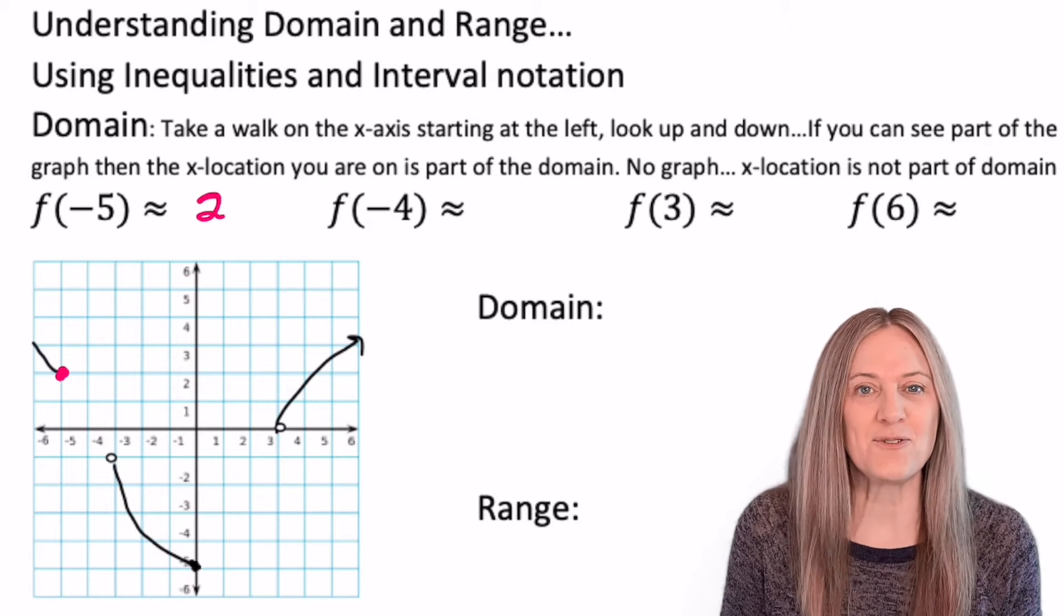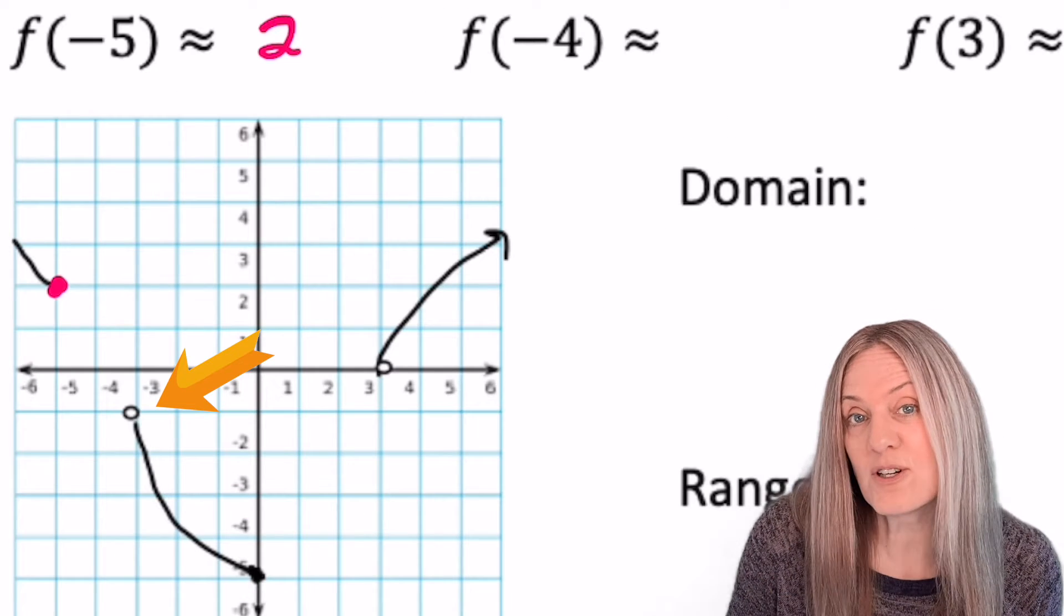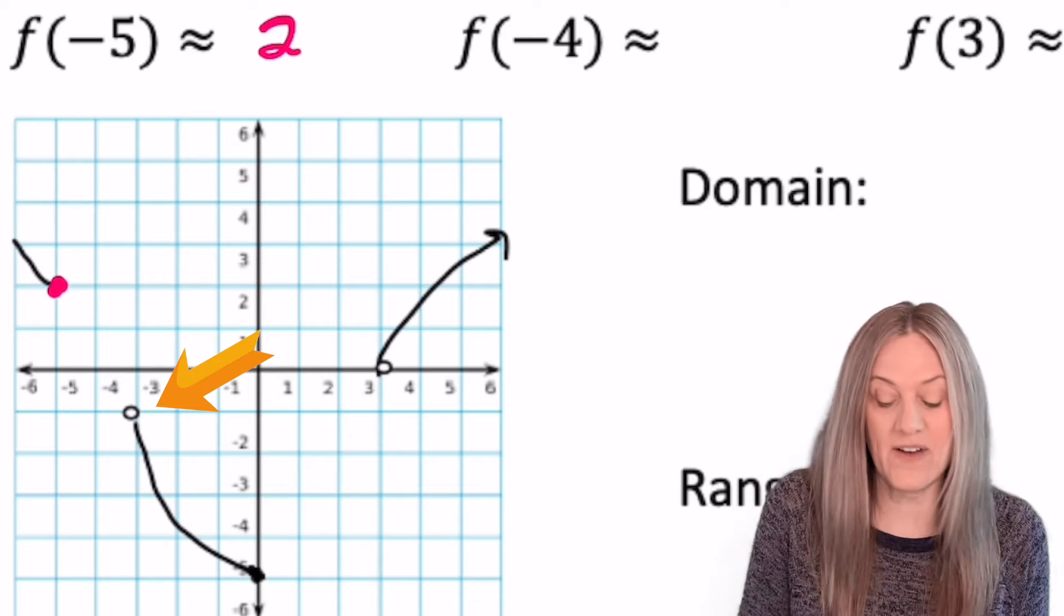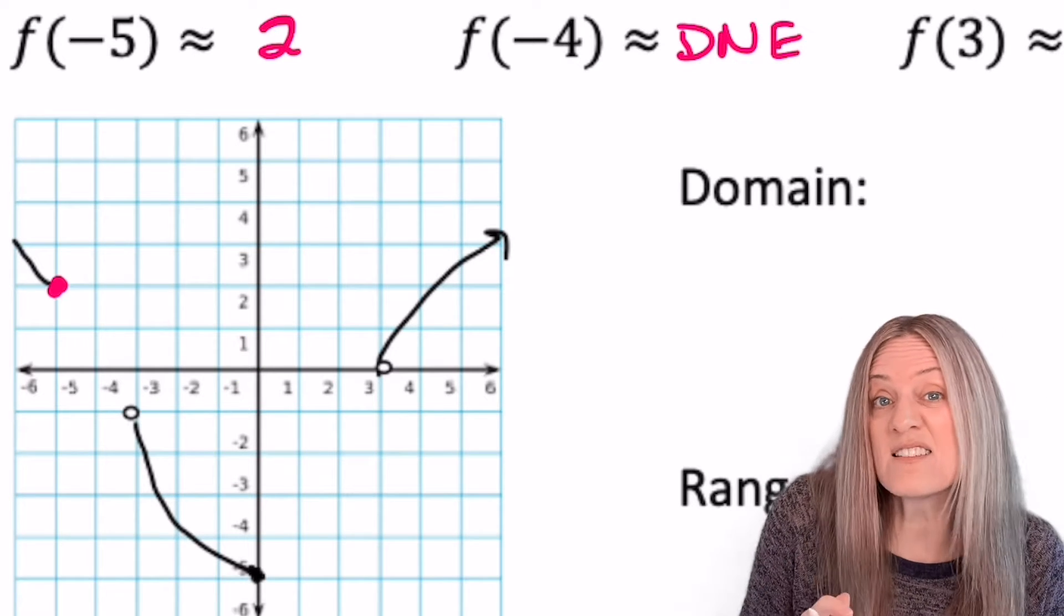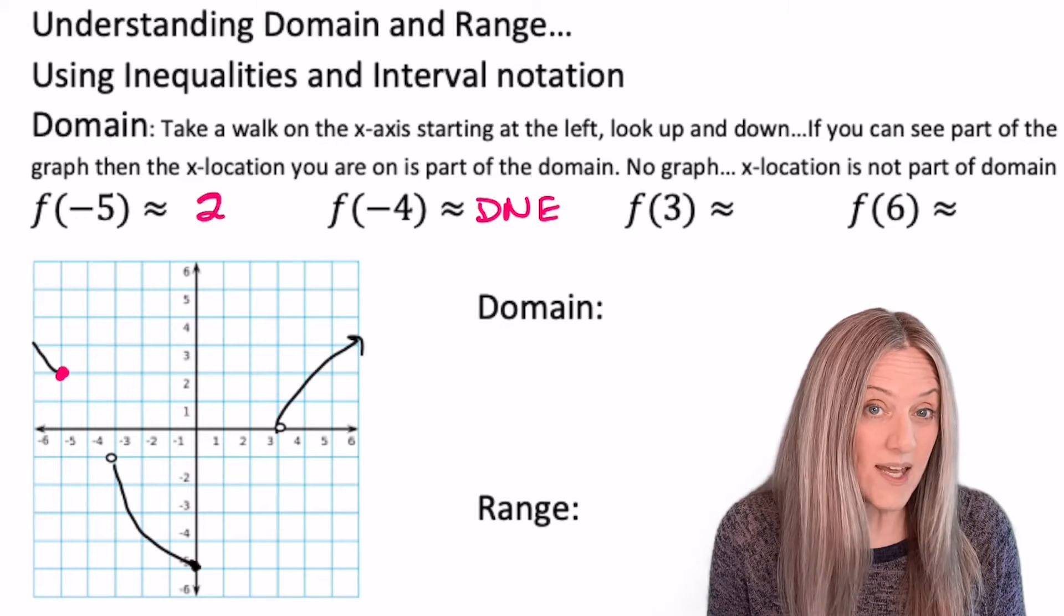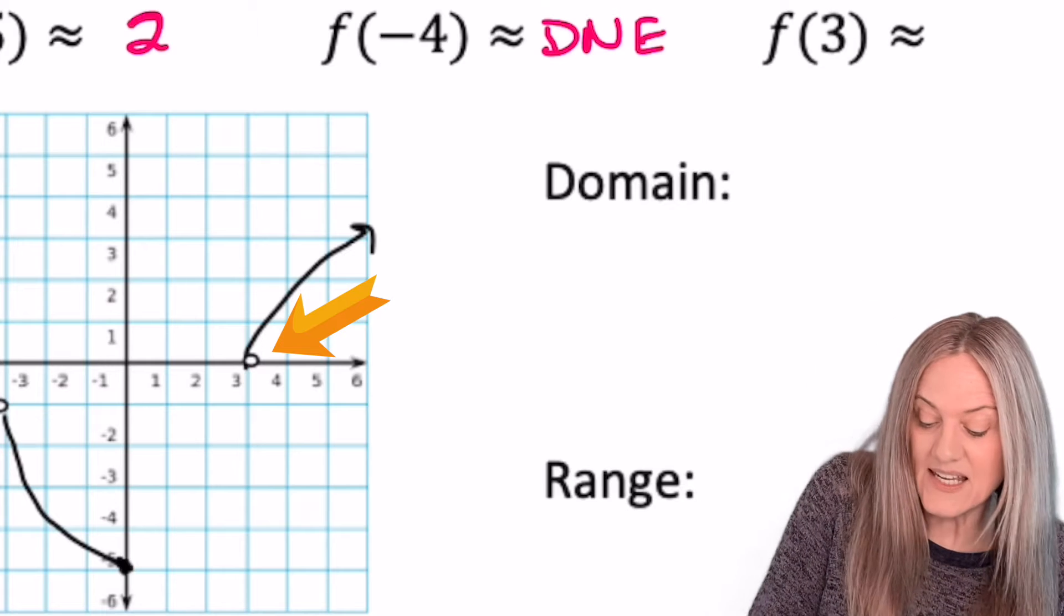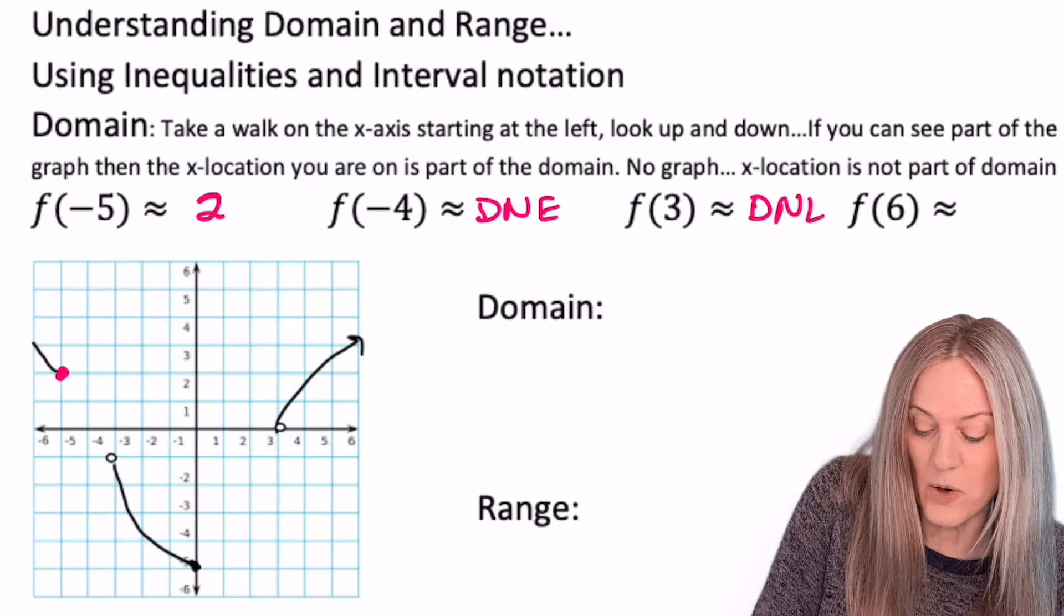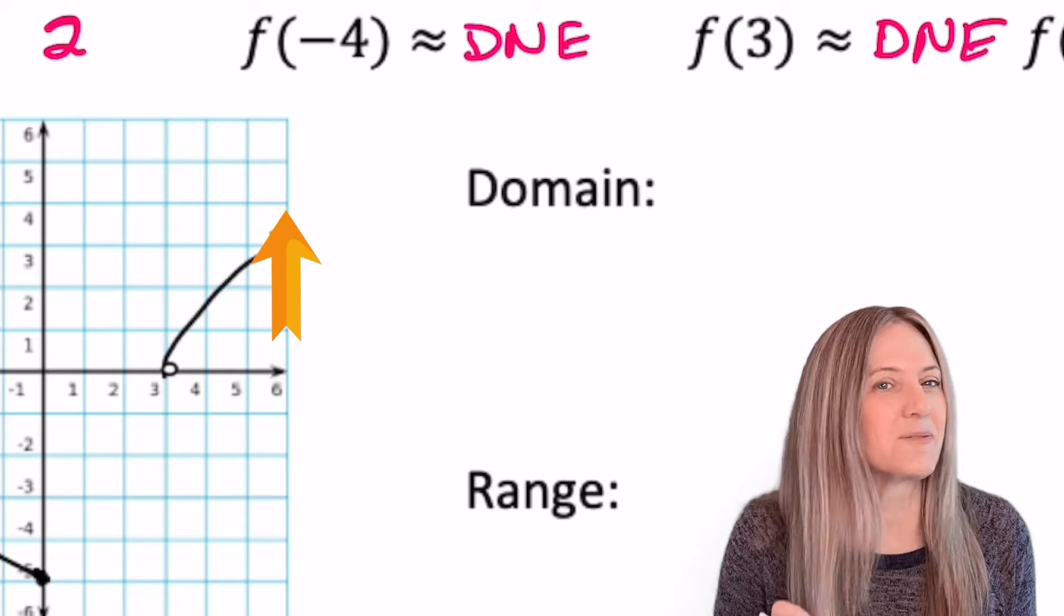Okay, hopefully you didn't find this too tricky because when x is negative 4, what do you notice? There's an open circle. That means there is no function value there. So we would often just say DNE, meaning does not exist. There is no output when the input is negative 4. Now look at 3. When x is 3, the same thing happens. Open circle. DNE does not exist. There is no output. But at f of 6, looks to be approximately 3.